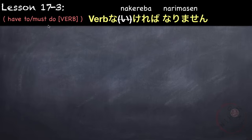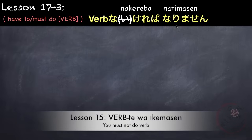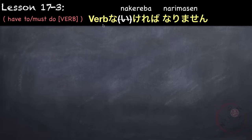We say 'must do' by using verb nai form, removing the i and adding kereba narimasen — verb nakereba narimasen. This is the opposite of 'you must not do a verb,' which is verb te wa ikemasen. Literally it means: 'nakereba' — if you don't — 'narimasen' — it won't do. It's a double negative, so it becomes a positive: you must do a verb.